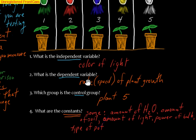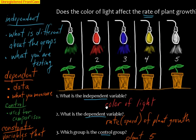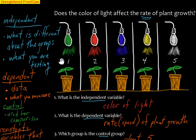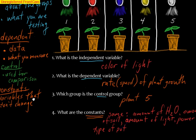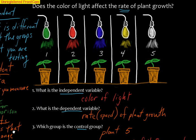The idea of an experiment is to have one variable that is different — that's the independent variable, the thing you're testing, and you can think of it as the cause. The dependent variable is the effect — it's what you measure, and dependent gives you data. The control group is the normal situation used for comparison. Constants are those things that have to stay the same to make it a fair test. Hopefully this review of experiments will help you identify the different parts of experiments when we look at different examples.